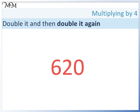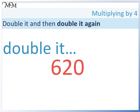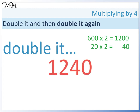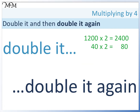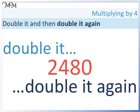What is 620 times 4? Double it: I know that 2 times 600 will give me 1,200 and 2 times 20 will give me 40. I add them together and I get 1,240. Then 1,200 times 2 is 2,400 and double 40 is 80. I add them together and I get 2,480.